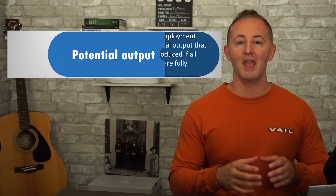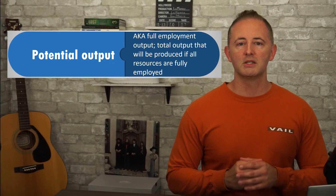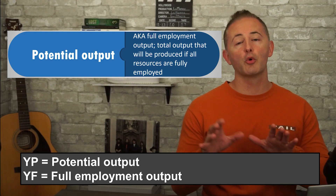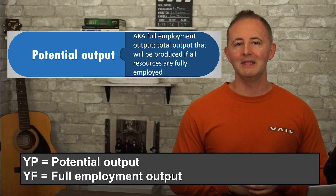The LRAS curve basically corresponds to our old friend from Unit 1, the production possibilities curve. The PPC represents the maximum sustainable capacity of output for an economy, and that's what the LRAS curve represents as well. That phrase, maximal sustainable capacity, or potential output, refers to the total output that will be produced if all resources are fully employed. The LRAS curve represents an economy's potential output, aka the full employment level of output. On the axis, we can label this as YP for potential output, or YF for full employment output — either way is fine. Just pay attention to how you're told to label it on an FRQ.